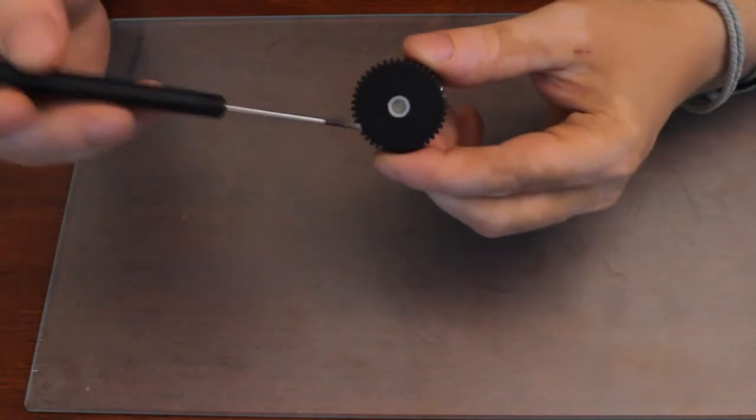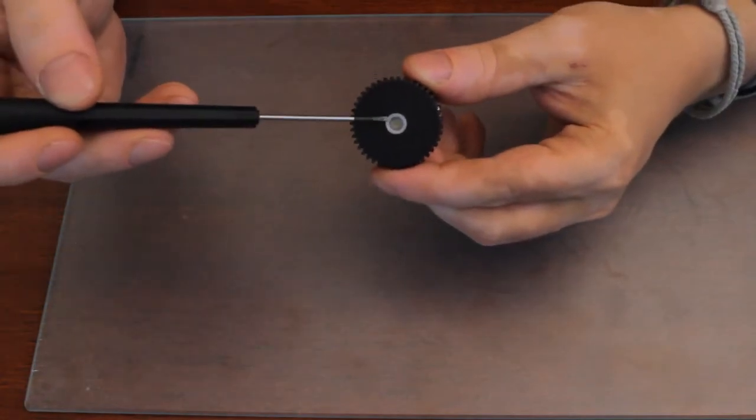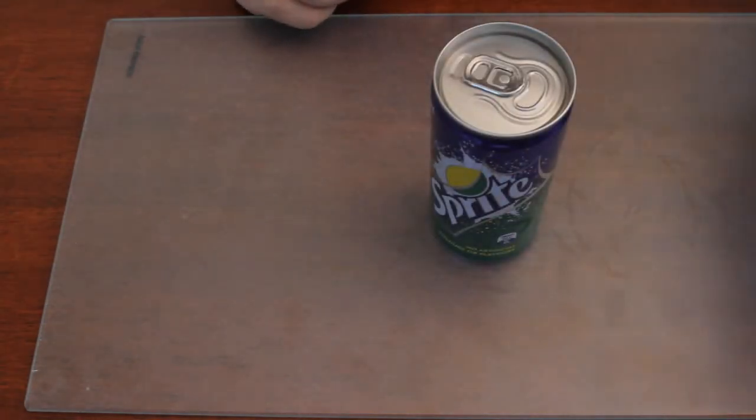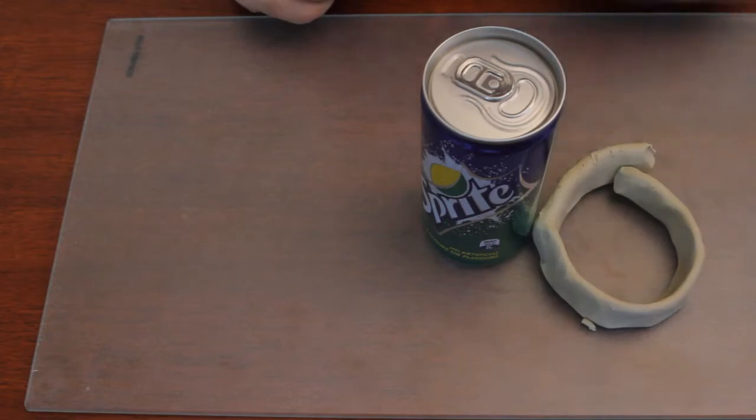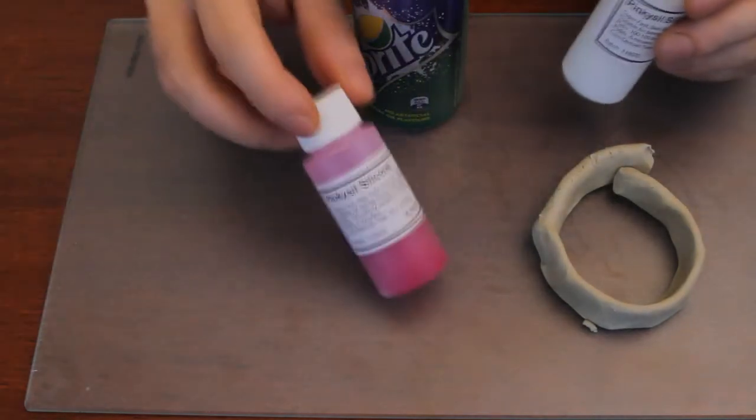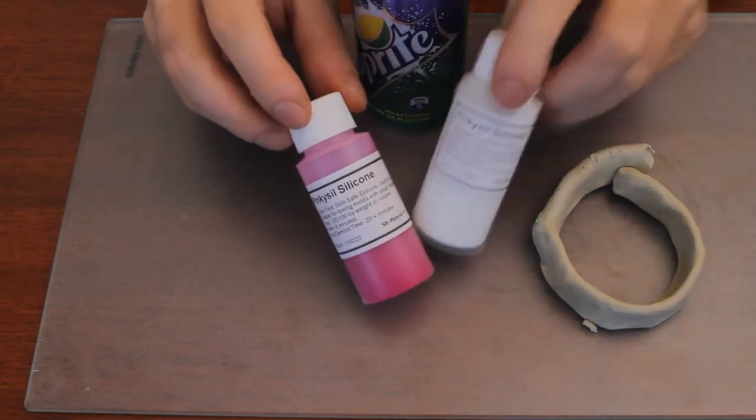Here I have those two parts assembled and I fill the hole with clay. To make a mold you need the sprite, clay and silicone. Here I'm using Pinky Seal silicone.